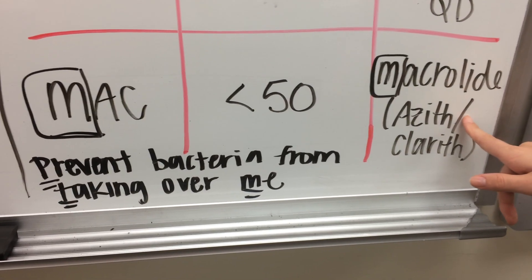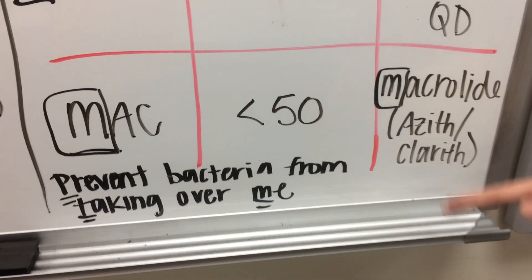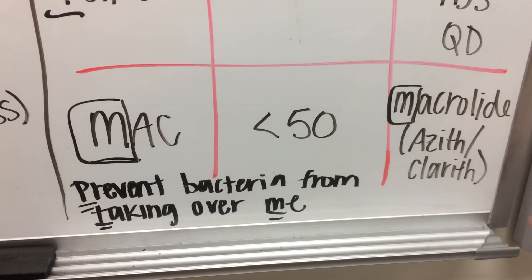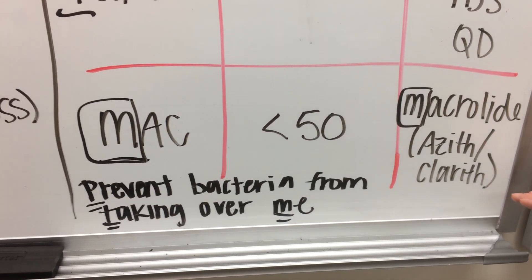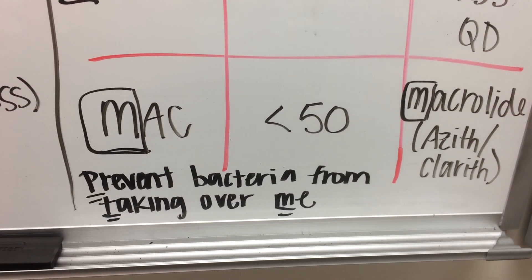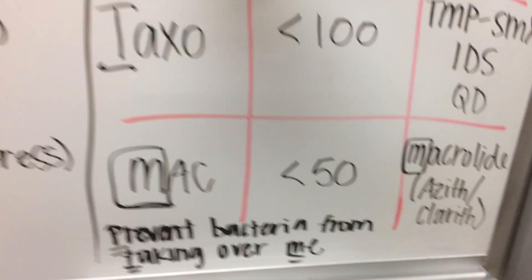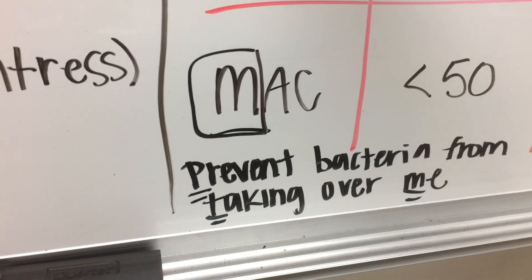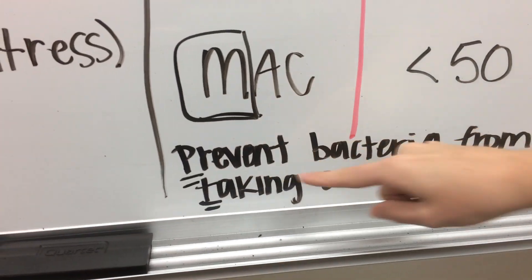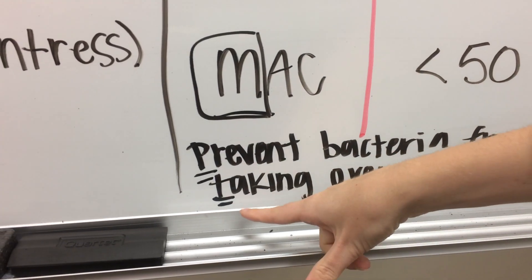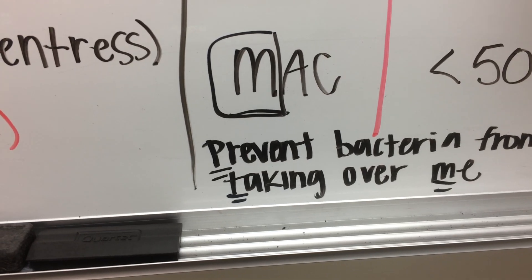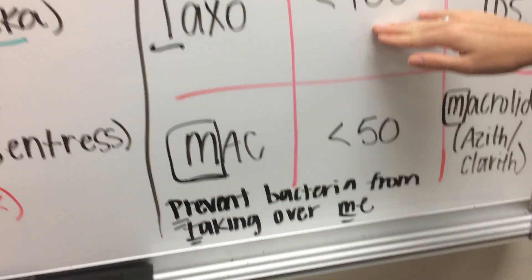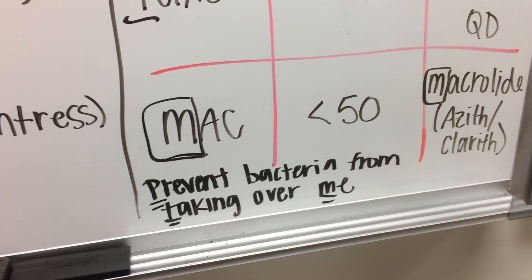For MAC: CD4 less than 50 — we add macrolides. The M for MAC helps remember macrolides. Specifically, azithromycin 1200 mg weekly (or 600 mg twice weekly), or clarithromycin twice daily. A mnemonic for the order of these infections: P, T, M — 'Prevent bacteria from Taking over Me.' For the CD4 counts, remember 200, then divide by two to get 100, and divide again to get 50.